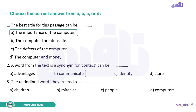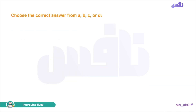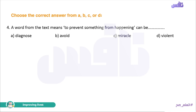Number three. The underlined word 'they' refers to: children, miracles, people, or computers. It refers to computers. Number four. A word from the text means 'to prevent something from happening': diagnose, avoid, miracle, or violent. The answer is 'avoid' — يتجنب.